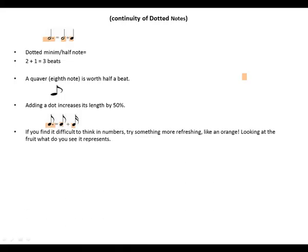If you find it difficult to think in numbers, try something more refreshing like an orange. Looking at the fruit, what do you see? One whole orange is like one whole beat or a crotchet.